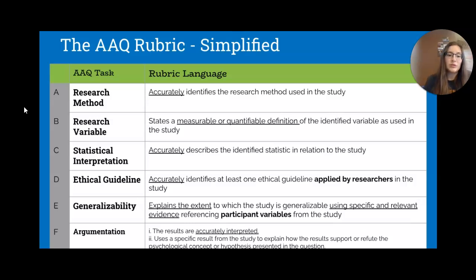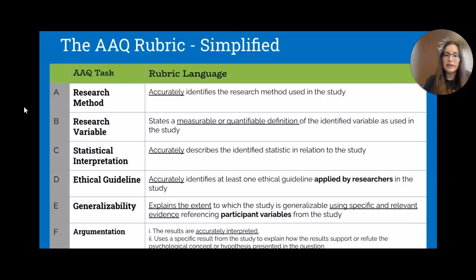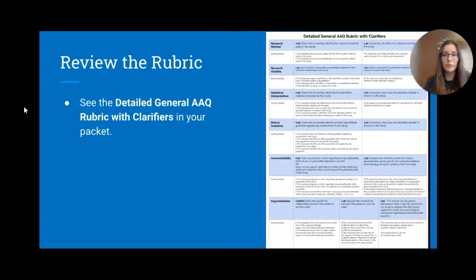For the first three parts there's essentially a single right answer. Part D for the ethical guideline is more flexible — you can choose anything that appears to be applied by the researchers as described. For Part E, generalizability, you state the extent to which the study is generalizable, either naming a population it can be generalized to or one it cannot because the sample isn't representative. Part F is argumentation on a two-point scale: accurately interpret the study and relate it to the hypothesis — best answered in two sentences.